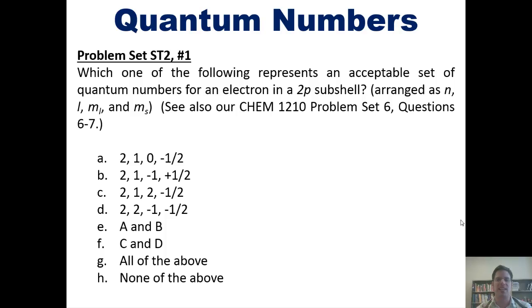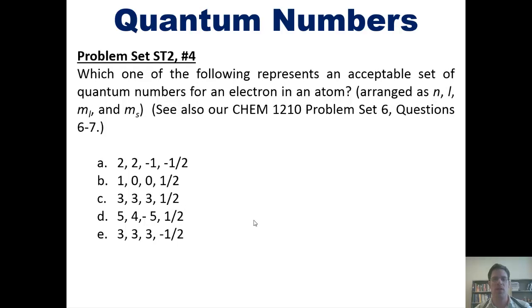And that brings us then to a couple of quantum number questions. Which one of the following represents an acceptable set of quantum numbers for an electron in a 2p subshell? Now I'm not going to answer this question for you, but we'll post a link here to a separate video in which I answer some similar questions that you're welcome to watch for some help. Here's another one. Which one of the following represents an acceptable set of quantum numbers for an electron in an atom? Okay, it's essentially the same question with different sets of numbers. Once again,